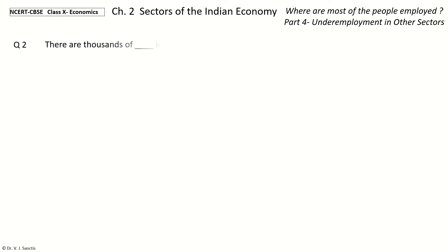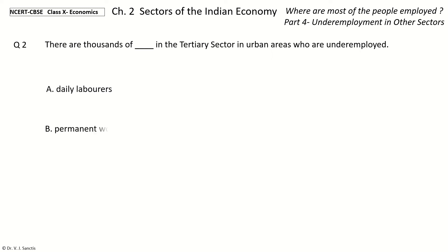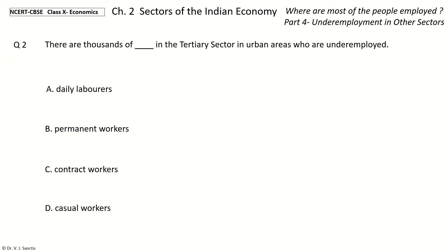Question 2: There are thousands of workers in the Tertiary sector in urban areas who are underemployed. The options are: Daily Laborers; Permanent Workers; Contract Workers; Casual Workers. The answer is Casual Workers. There are thousands of Casual Workers in the Tertiary sector in urban areas who are underemployed.